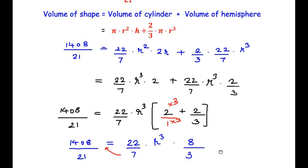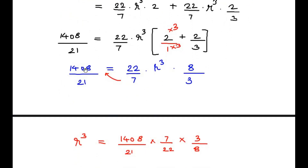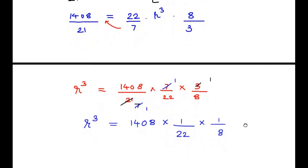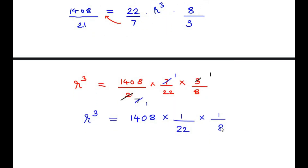Rearranging, r³ = (1408/21) × (7/22) × (3/8). Simplifying: 3 and 21 cancel, 7 and 7 cancel, 1408 divided by 8 gives 176, and 176 divided by 22 gives 8. So r³ = 8.